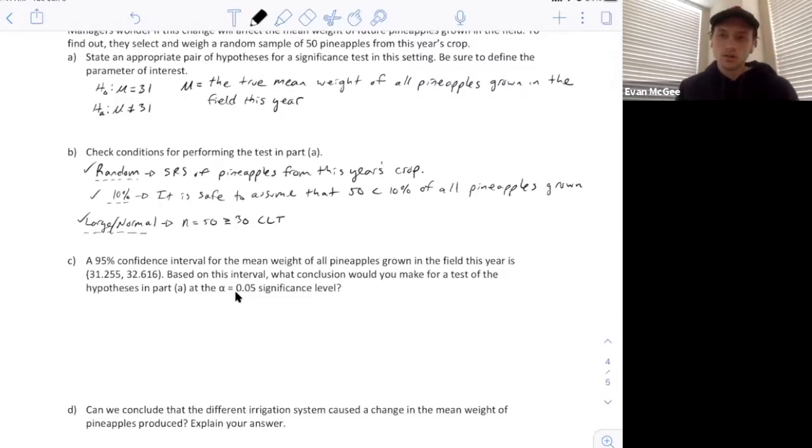We're looking to see, does the null fall within this interval. And 31 does not fall in this interval. Since the alpha level is 5%, that means we're relating it to a 95% confidence interval, which they've given us here. And since 31 does not fall in this interval, then we have reason to believe that it's not 31. So we are going to reject the hypothesis that it's equal to 31.